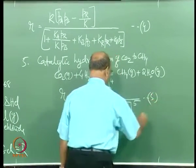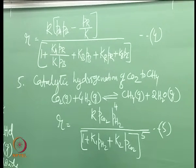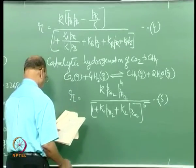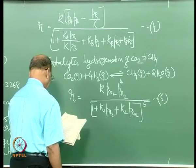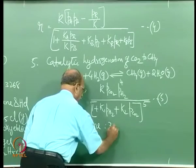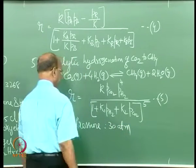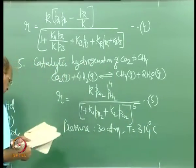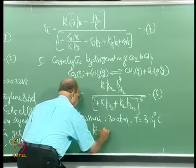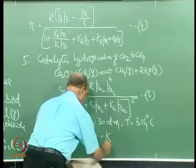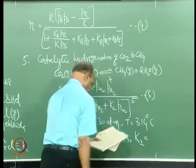A very peculiar equation. One more for SO₂ - to show that if the catalyst is changed, the rate expression also changes. This reaction is at very high pressures: 30 atmospheres, and temperature 314 degrees centigrade. Values given: K₁ = 1.73 and K₂ = 0.3.